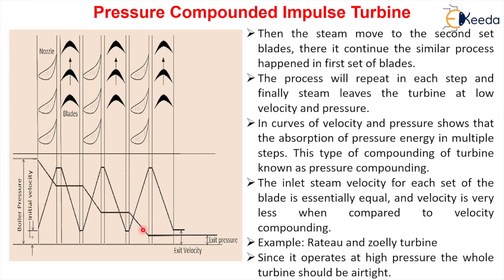The inlet steam velocity for each set of blades is essentially equal and much less compared to velocity compounding — in velocity compounding, velocity was reducing at each stage, but here velocity is approximately the same at the inlet of every moving blade. Examples of pressure compounded impulse turbines are the Rateau and Zoelly turbines. Since this turbine operates at high pressure, the whole turbine should be airtight to prevent steam leakage.